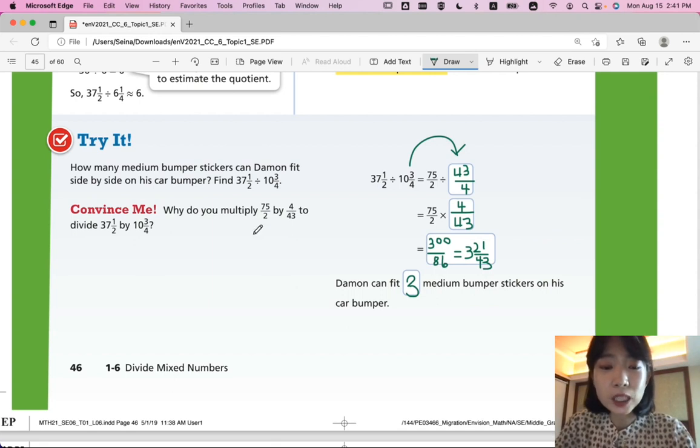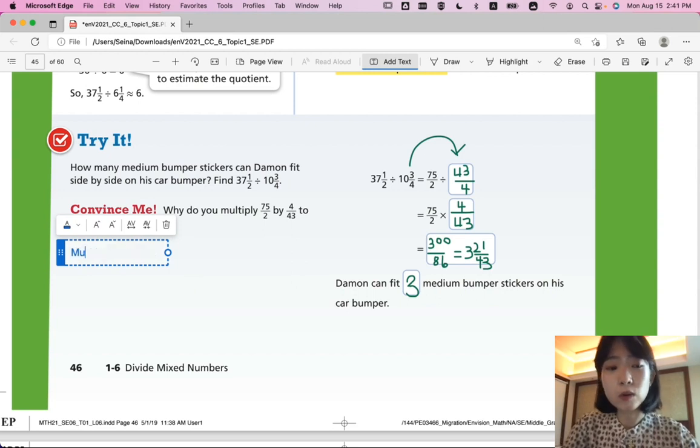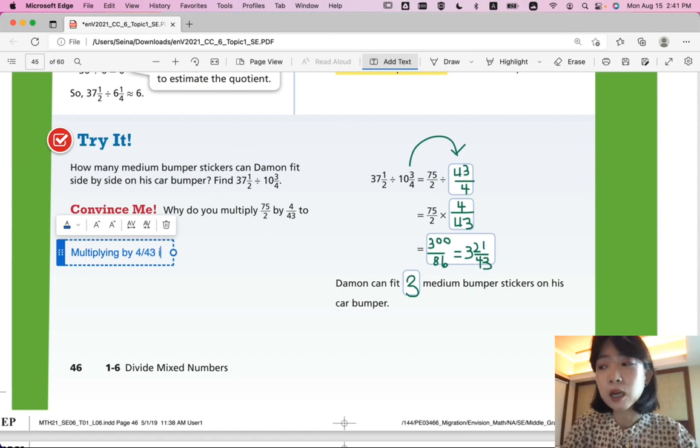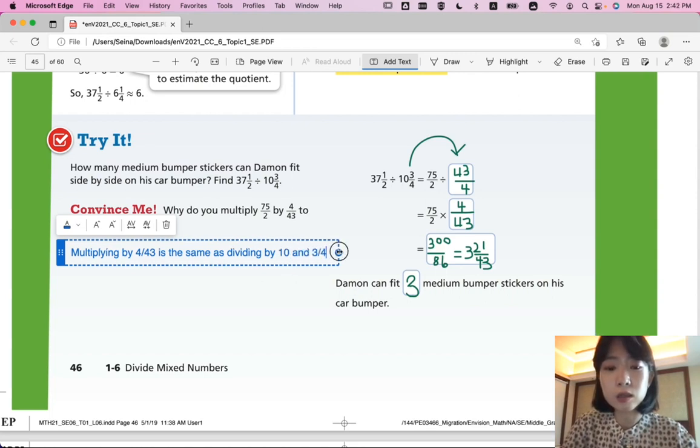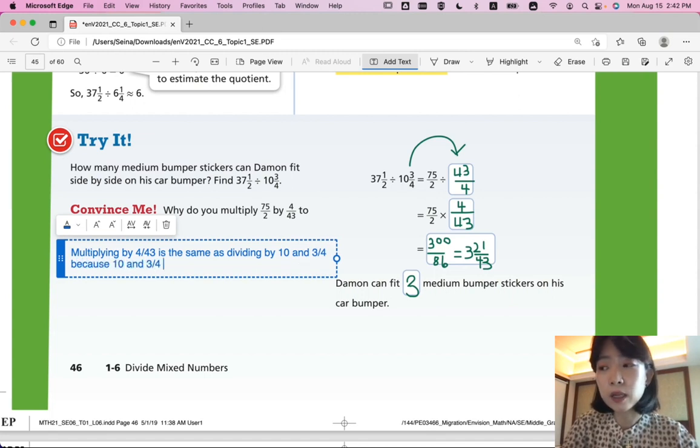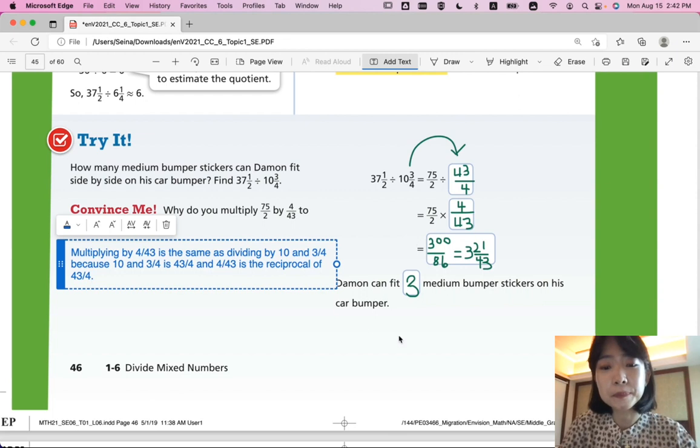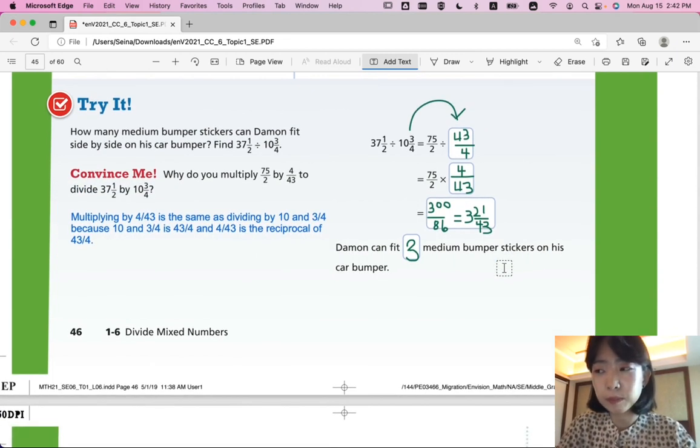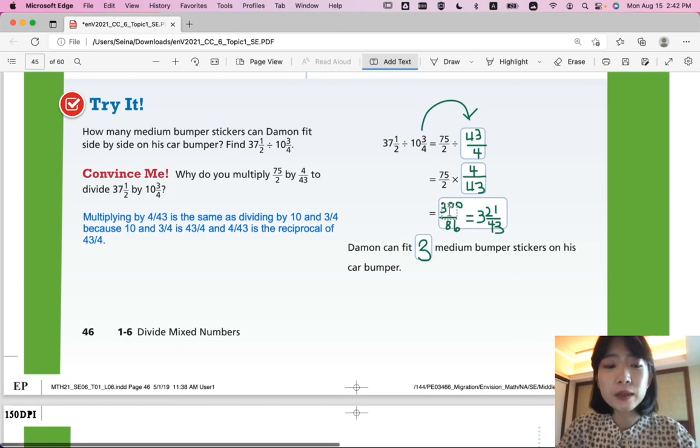Convince me. Why do you multiply 75 over 2 by 4 over 43 to divide 37 half by 10 and 3 fourth? Why? Because we learned that division can change into multiplication by using reciprocal. Right? So, multiplying by 4 over 43 is the same as dividing by 10 and 3 fourth. Because 10 and 3 fourth is 43 over 4 and 4 over 43 is the reciprocal of 43 over 4.